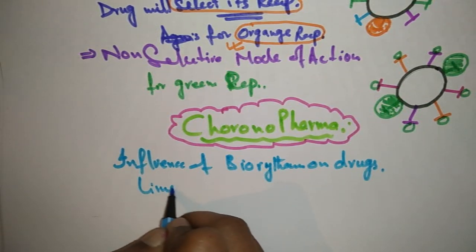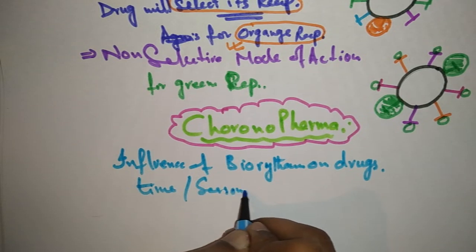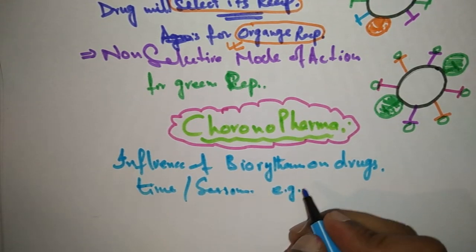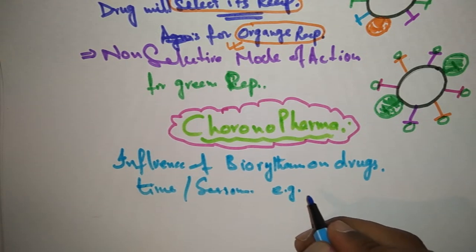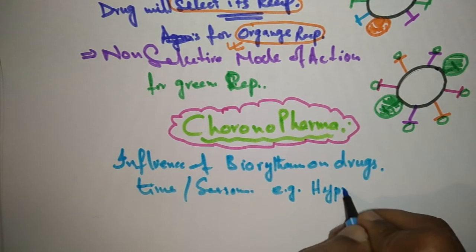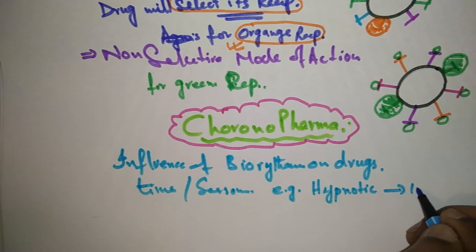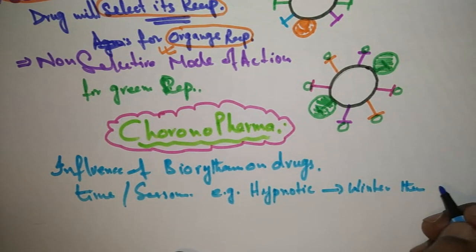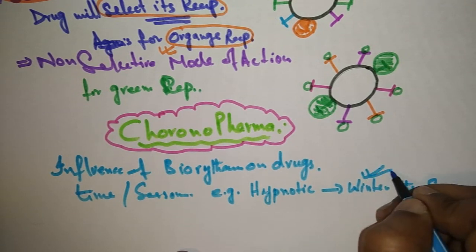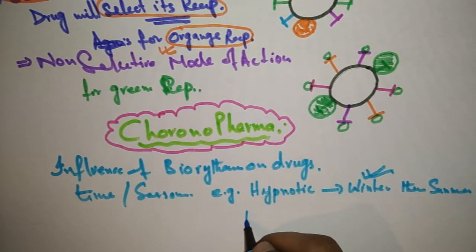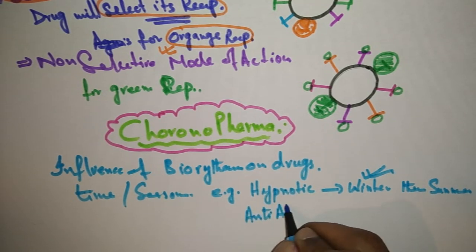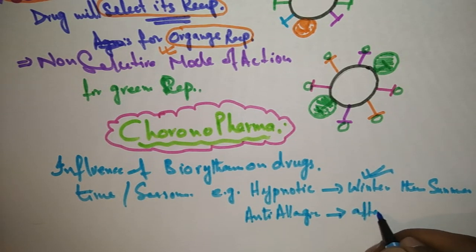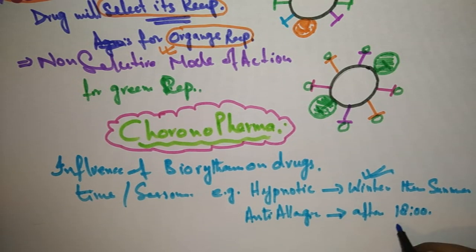Drugs change in their activity according to time and seasons. For example, hypnotic drugs work more efficiently in winter than summer. Anti-allergic drugs will work more effectively after 1800, meaning after 6 PM.